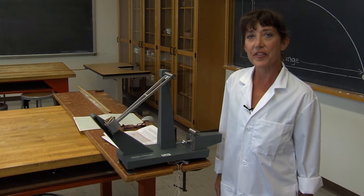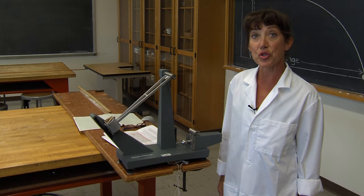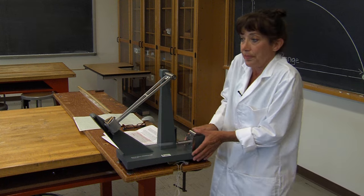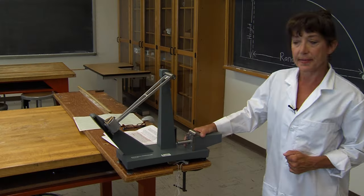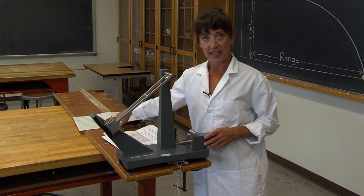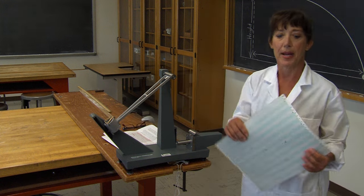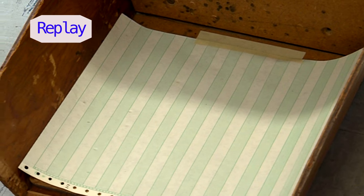Now I'd like to talk about a few of the experimental procedures. To measure the range, we'll launch the ball into a catch box. On the catch box, we will put a piece of carbon paper, which will make marks on the paper when the ball strikes it, like so.